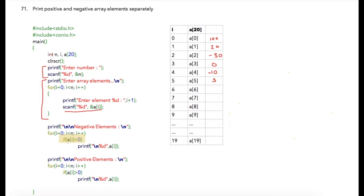Once scanning is done, we check each array element with the condition whether it is less than 0. If it is less than 0, then it is a negative number and we will print it. Similarly, we will have another for loop in which we will print the positive elements.